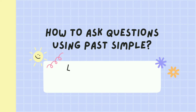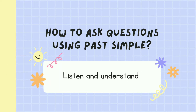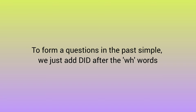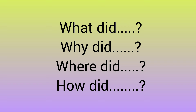How to ask questions using Past Simple. To form a question in the past simple, we just add DID after the WH words. For example: What did? Why did? Where did? How did?